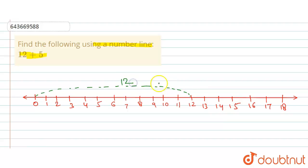This is the 12. Now we will add 5. So from 12 we will add 5. 12 to 13, that is 1, and this is 2, and this is 3...